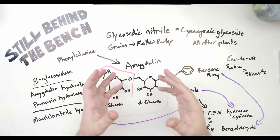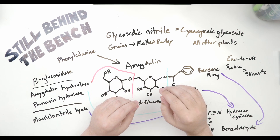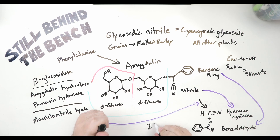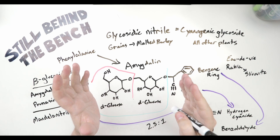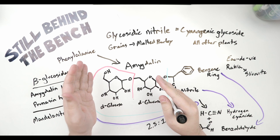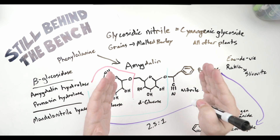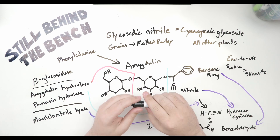In any case of hydrogen cyanide turning into ethyl carbamate, you'll get about a 2.5 to 1 ratio — so about 40 percent conversion. For example, 100 milligrams of hydrogen cyanide would end up as 40 milligrams of ethyl carbamate.